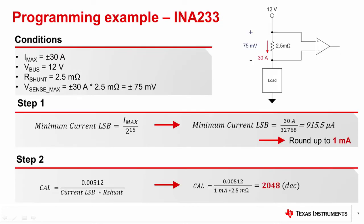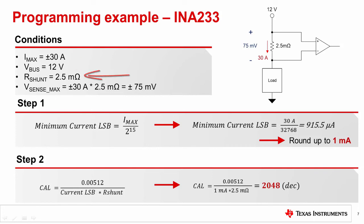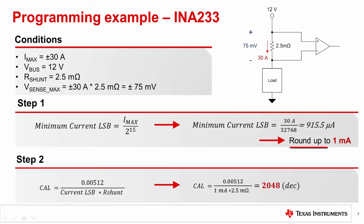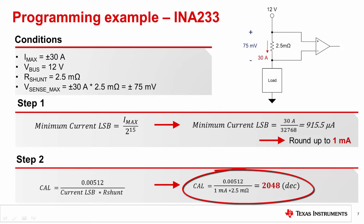Let's work through an example to apply what we've discussed so far, using the INA233 as the digital power monitor of choice. Let's say that the maximum expected current for this application is plus or minus 30 amps. The bus voltage is 12 volts, and the shunt resistor chosen is 2.5 milliohms to generate a maximum Vsense of plus or minus 75 millivolts. Using the max expected current of 30 amps, we arrive at the minimum current LSB value of 915 microamps. Let's round up and choose 1 milliamp per bit as the current LSB. The next step is to calculate the calibration register value. After we substitute in the current LSB of 1 milliamp and the shunt resistor value of 2.5 milliohms, we get the calibration value of 2048 in decimal.